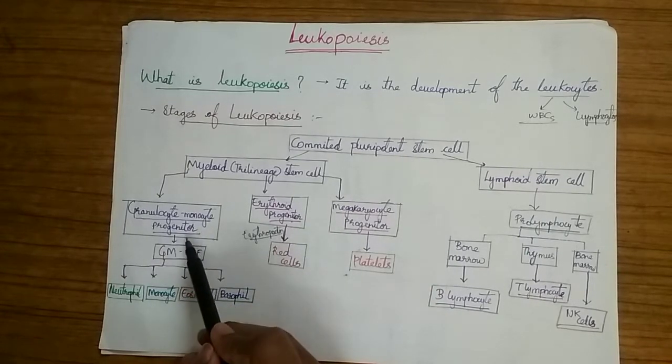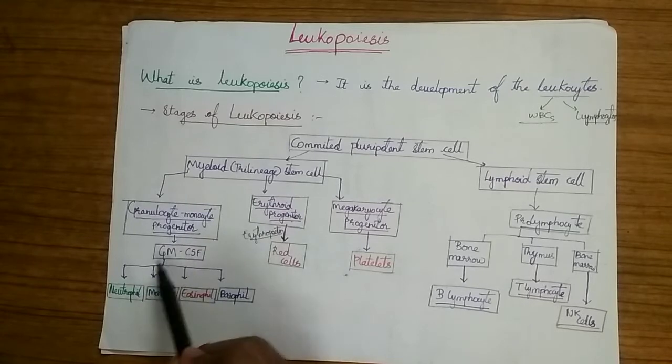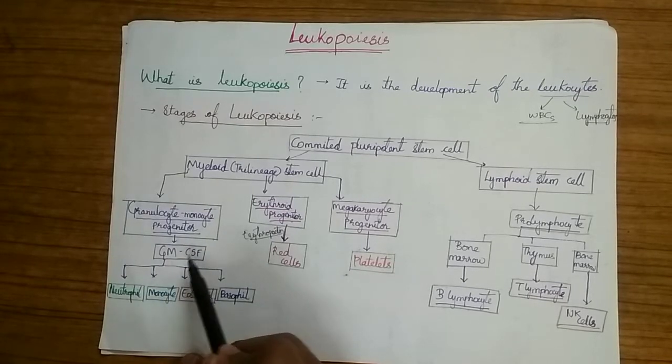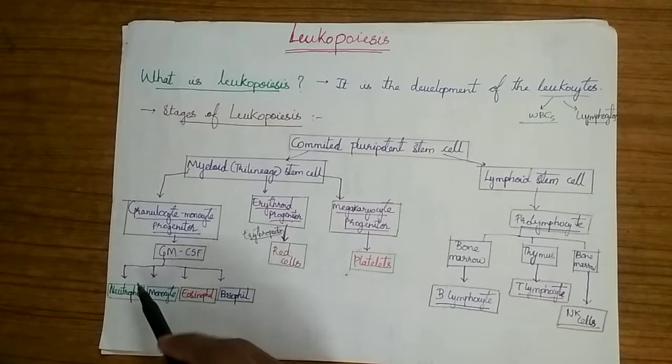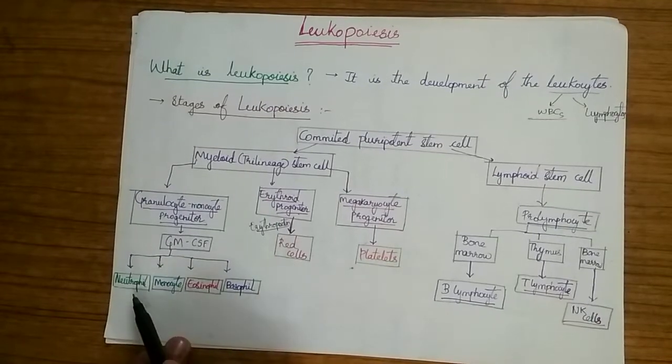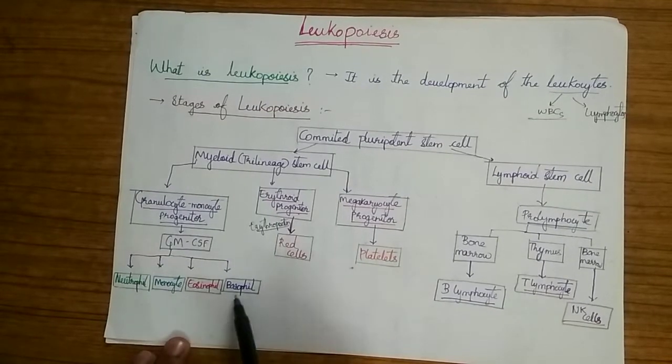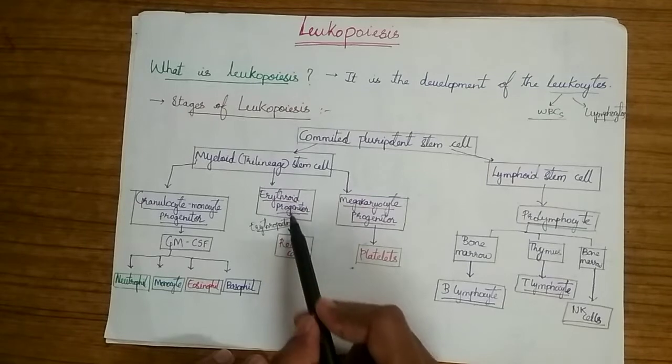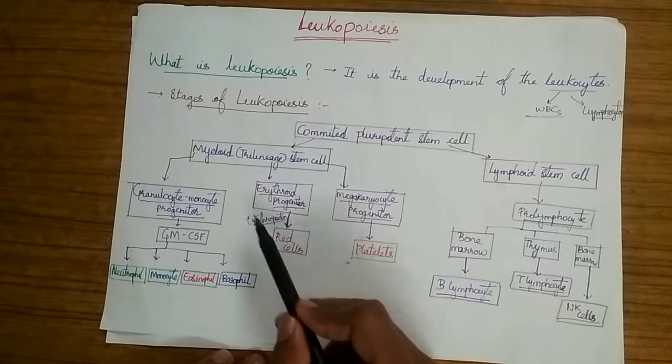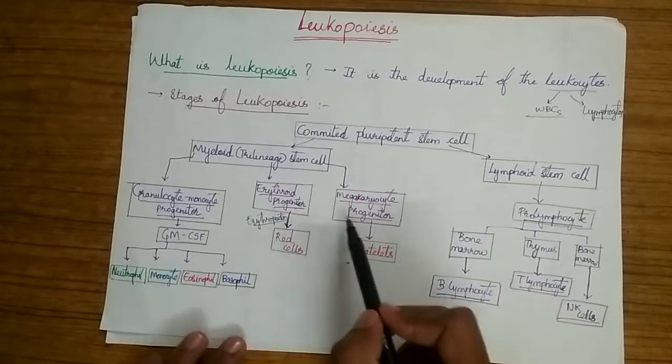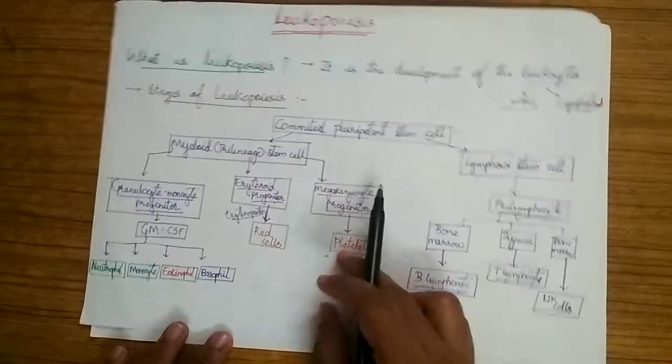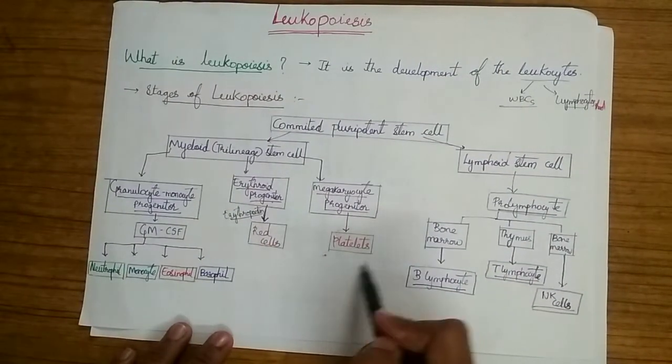The granulocyte monocyte progenitor cell with the help of granulocyte monocyte colony stimulating factor gives rise to the WBCs which are neutrophil, monocyte, eosinophil and basophil. The erythroid progenitor cell with the help of erythropoietin gives rise to the red cells and the megakaryocyte progenitor cells give rise to the platelets.